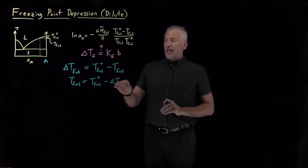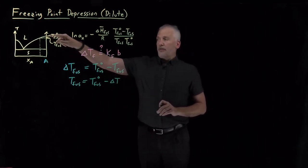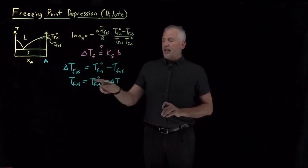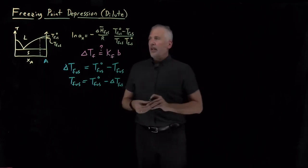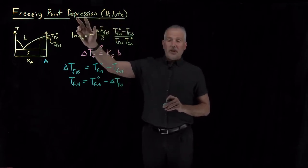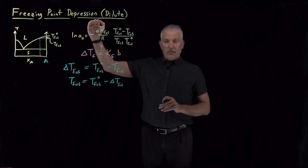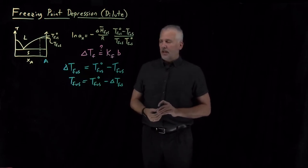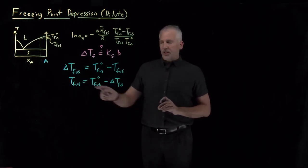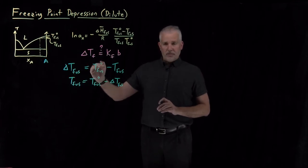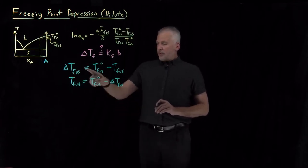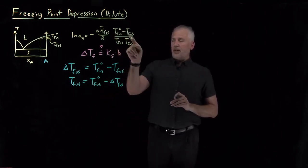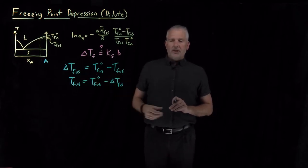Notice in this definition, even though the temperature has dropped — we'd normally define delta T as being a negative value — this delta T of fusion is the amount of freezing point depression. We know the freezing point is going to be depressed, so we go ahead and define this as a positive quantity, the amount by which the freezing point has been depressed. That's a relatively common source of confusion: this delta T should come out to be a positive number representing the amount of the depression.